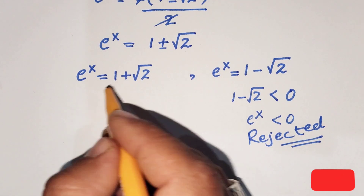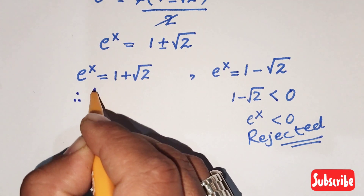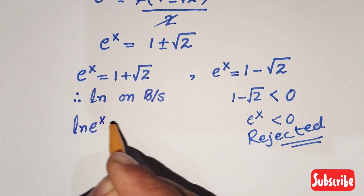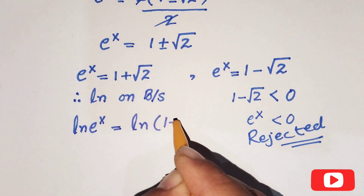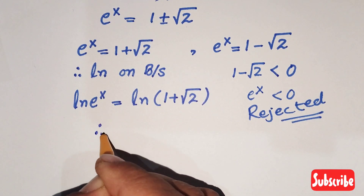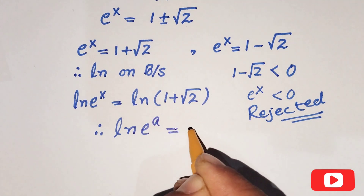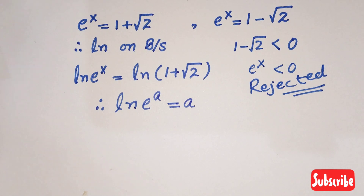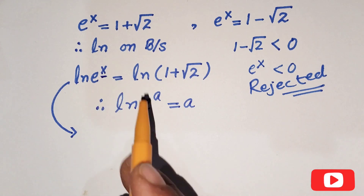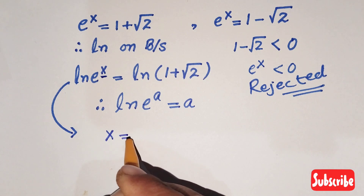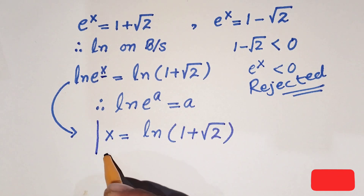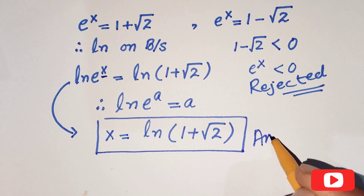Now taking the natural log on both sides, we have natural log of e raised to power x equals natural log of 1 plus square root of 2. By the rule that natural log of e raised to power a equals a, we get x equals natural log of 1 plus square root of 2. This is our final answer.